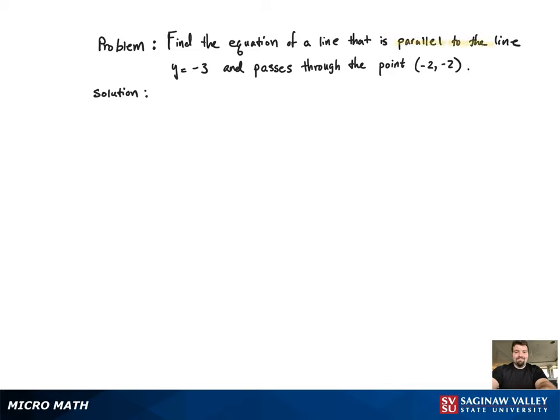First, we want to highlight the important information in the problem. Our line is parallel to the line y equals negative 3, and our line passes through the point negative 2, negative 2.